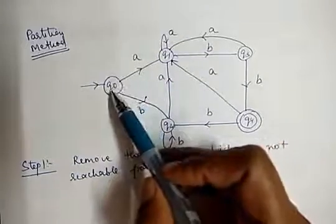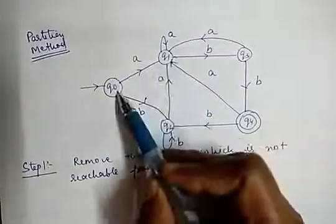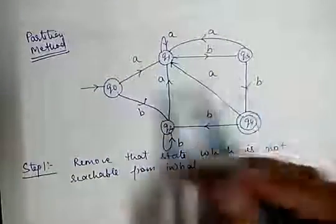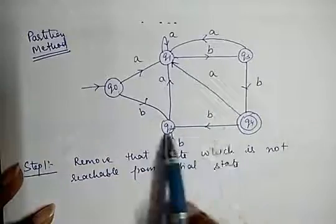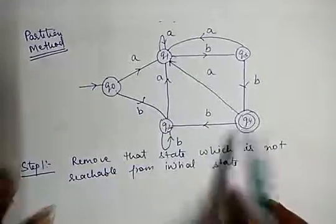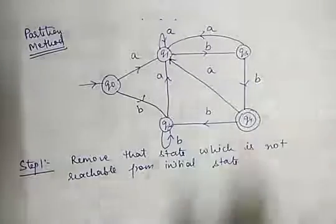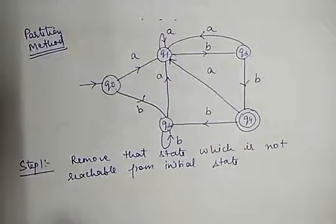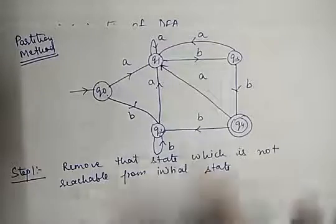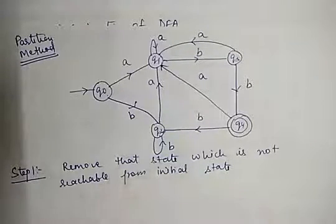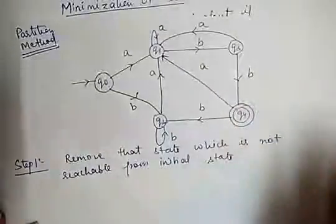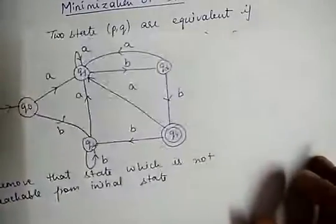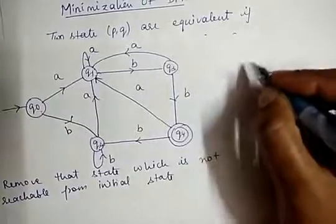Looking at this DFA, there is no state that cannot be reached from the initial state. If q0 is the initial state, I can reach q1 from q0, q2 from q0, q3 from q0, and q4 from q0. So step one is not applicable to this particular question. But if it were applicable, we would first remove those unreachable states from the DFA.